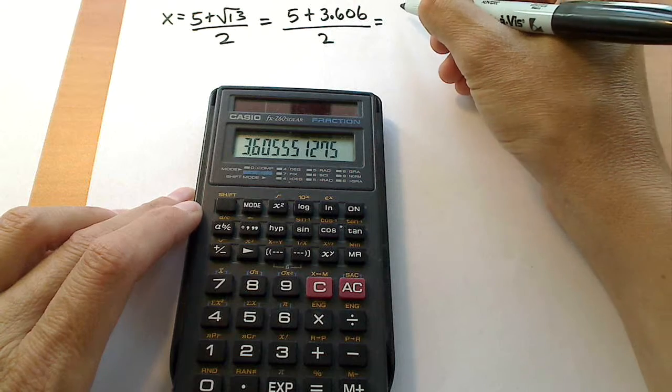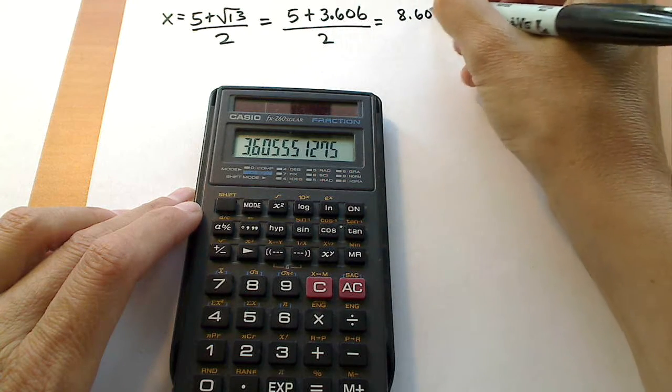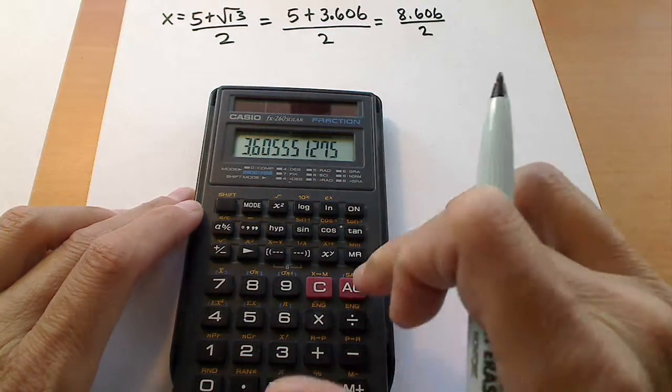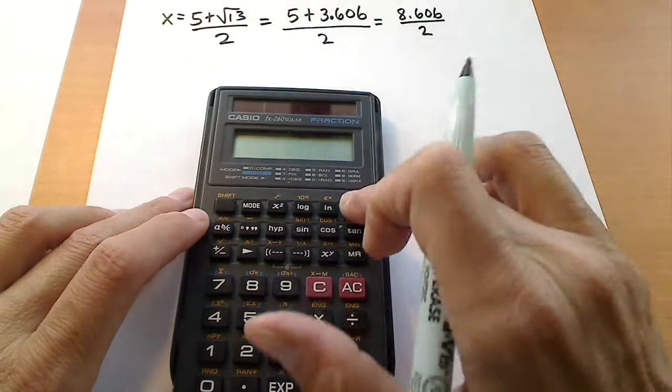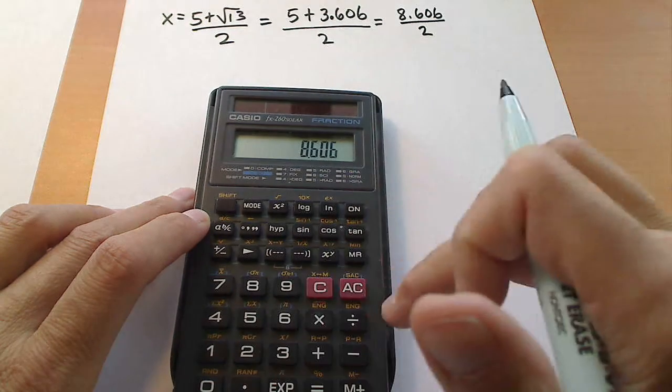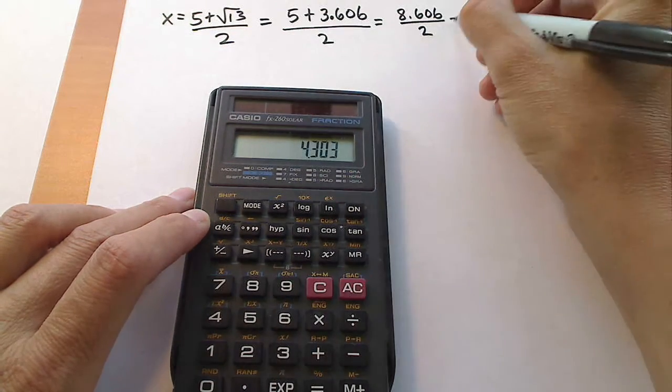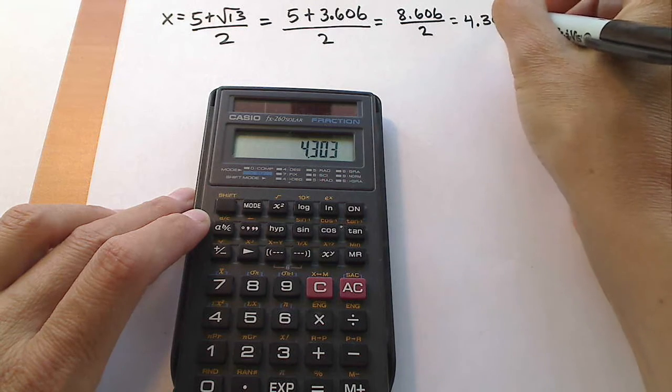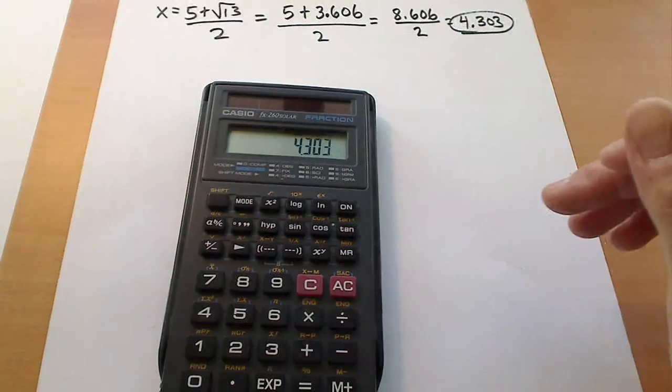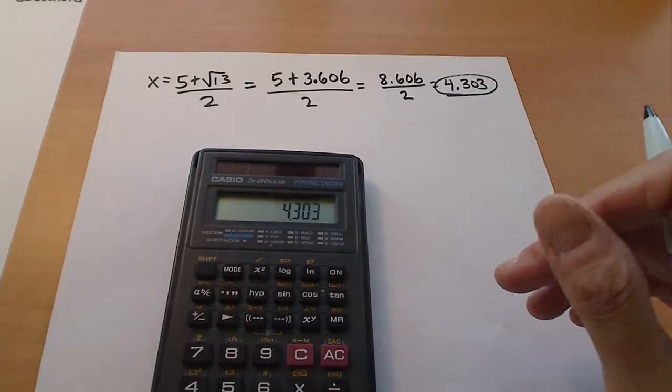And so this is 8.606 divided by 2. And if we just take 8.606 divided by 2 on our calculator we get 4.303. So that would be our first approximate answer for this problem.